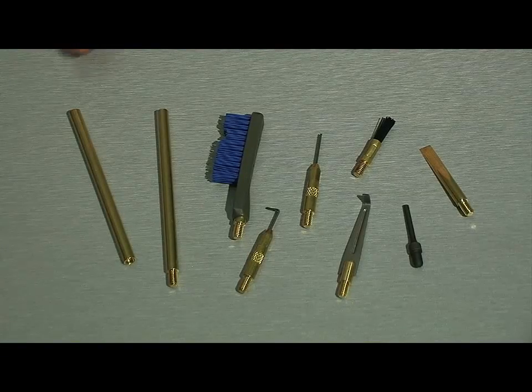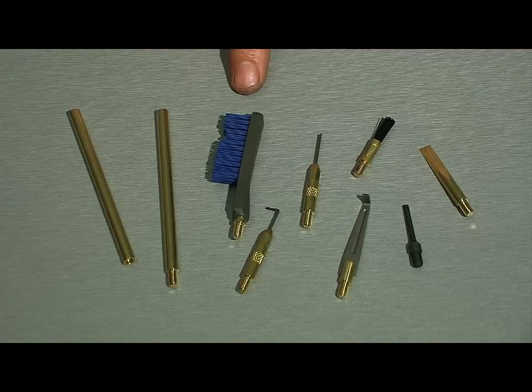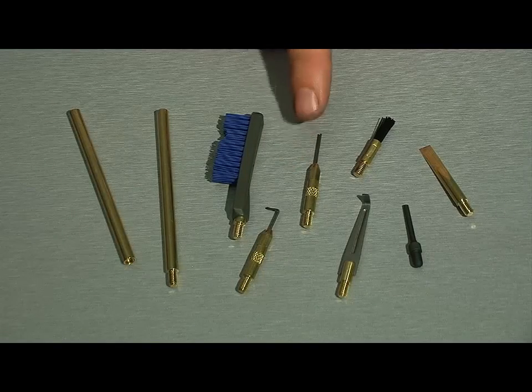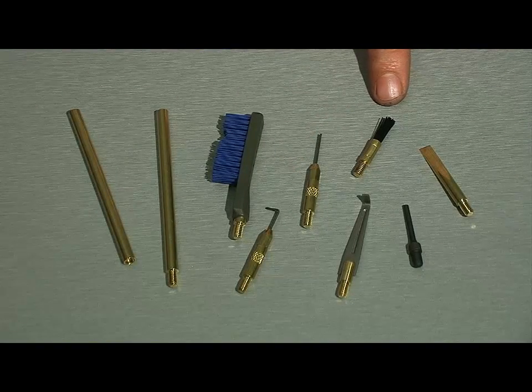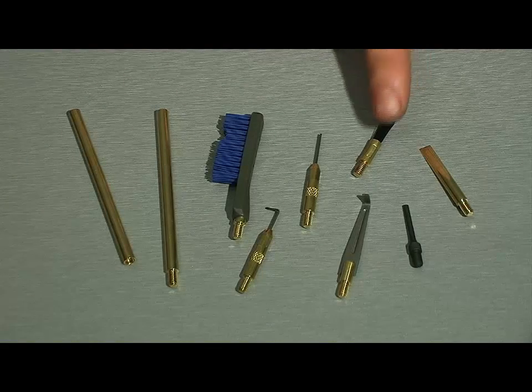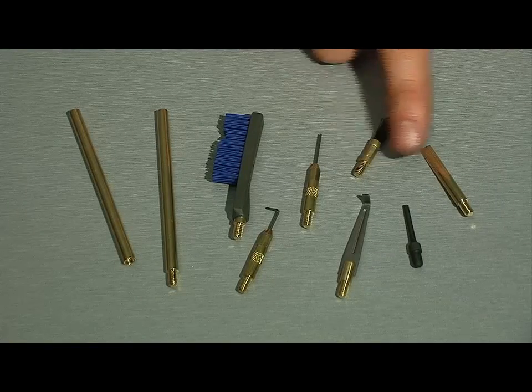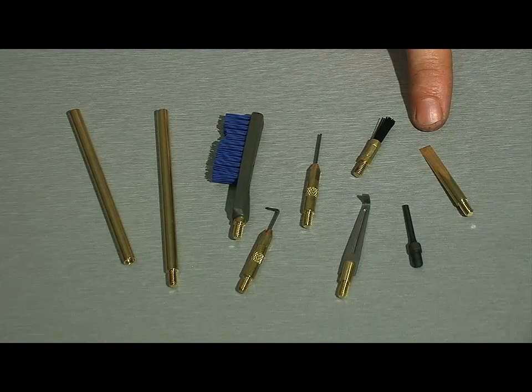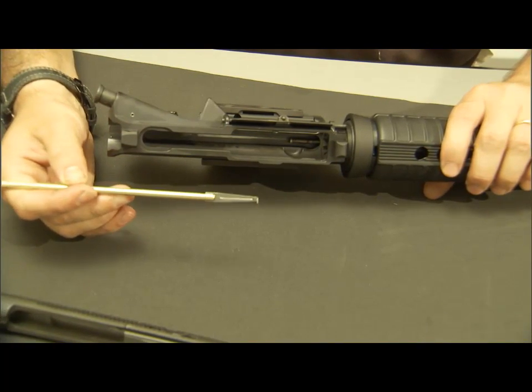In the brass scraper tool set, we have our rod handles, we have our compact all-purpose cleaning brush, we've got a bent pick, we've got a straight pick, we've got an end brush for lubricating the slides, we've got your locking lug star chamber scraping tool, we've got a pin punch to push the pins out, and we've got a flat scraper used to scrape the flat surfaces.